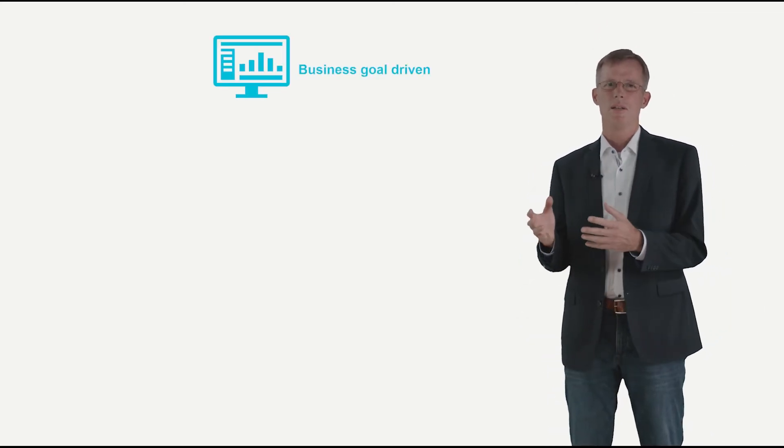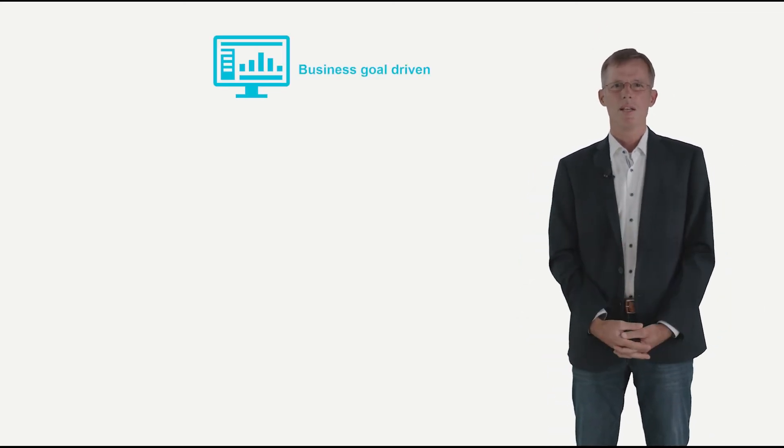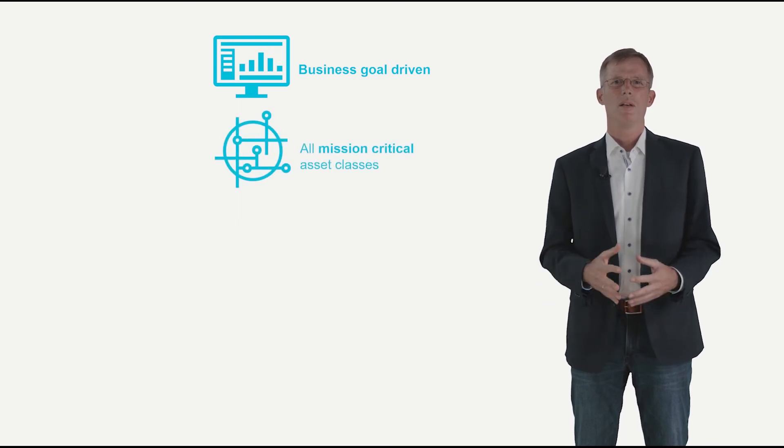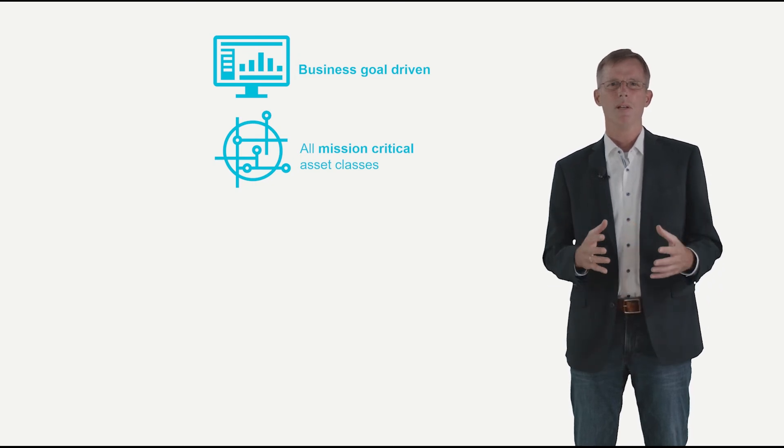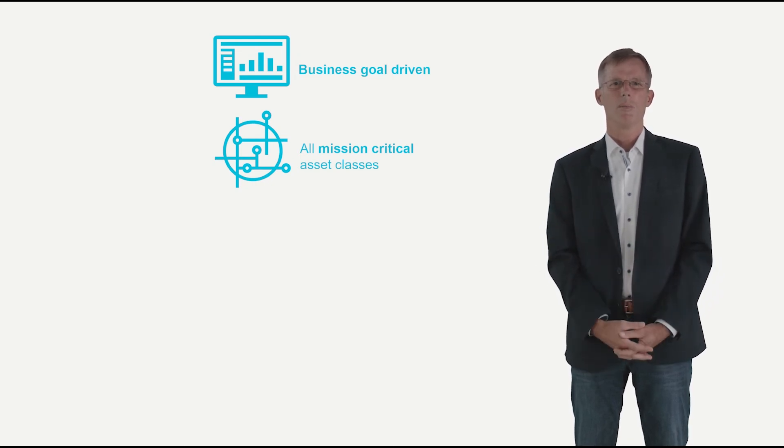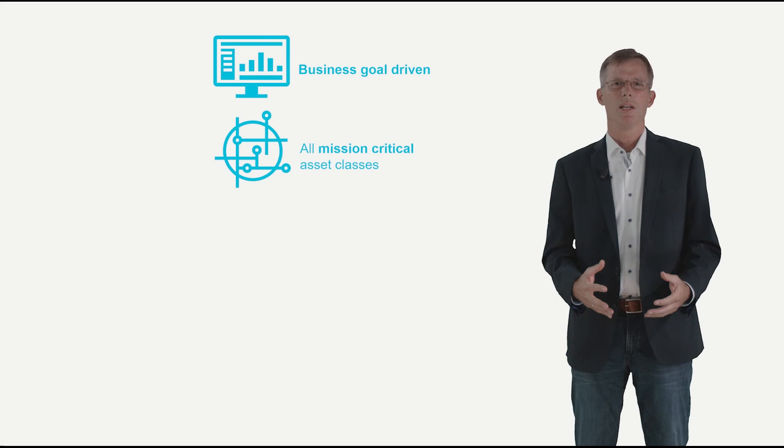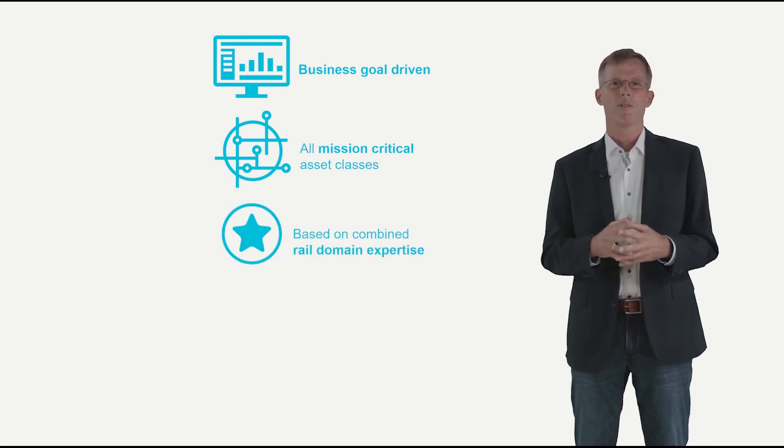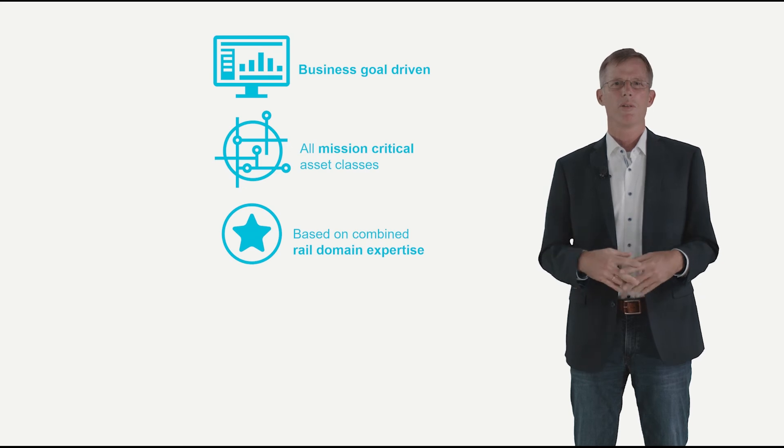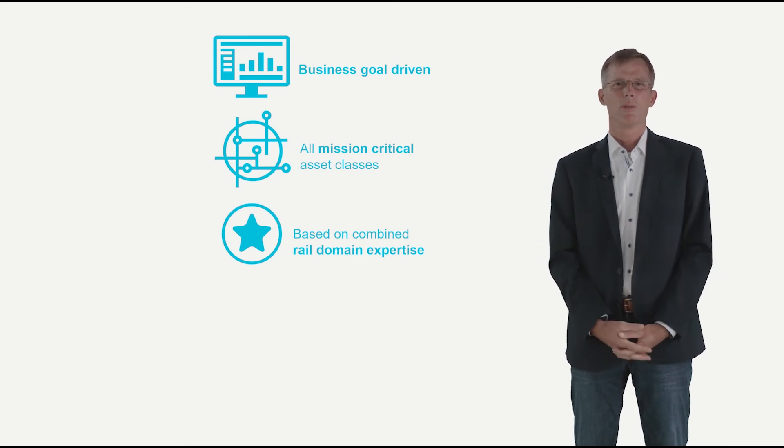Firstly, the starting and ending points of our solution are the business goals of our customers, such as service reliability and efficiency. Secondly, we do it holistically for all mission-critical asset classes of a whole mass transit system. These asset classes are so interdependent that service reliability can only be tackled holistically. This approach also means that we get performance and cost transparency on a system level, which corresponds nicely to the view of the commuter.